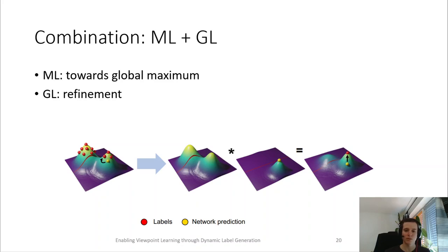Also, the two methods — multiple labels and Gaussian labels — are just two example methods for dynamic label generation, and other methods could be applied depending on the problem.